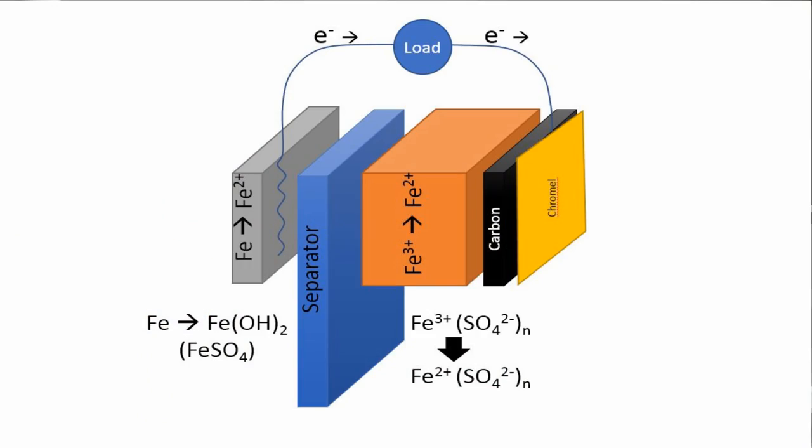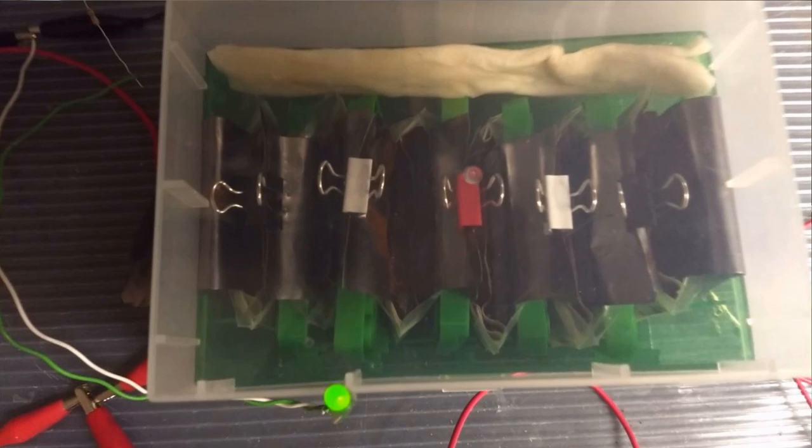So what is an all-iron battery? An all-iron battery is a battery with an iron anode such as steel wool and an iron cathode such as an iron-3 salt like iron-3 sulfate. Iron-3 is the highly oxidized form of iron and iron metal is the reduced form. When they balance each other out they go to iron-2 and so you can have the whole battery made of iron.